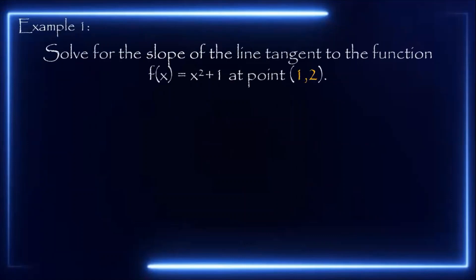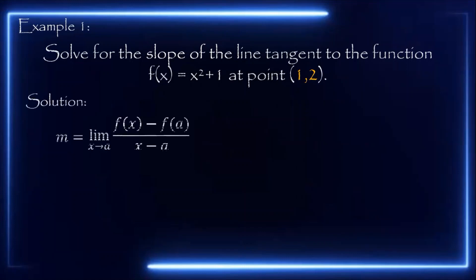For example number 1: solve for the slope of the line tangent to the function x squared plus 1 at point (1, 2). Using the limit definition of the slope — the limit of f(x) minus f(a) all over x minus a as x approaches a — we first identify a. Since a is the x-value of the given point and our point is (1, 2), a equals 1. So we have the limit as x approaches 1.